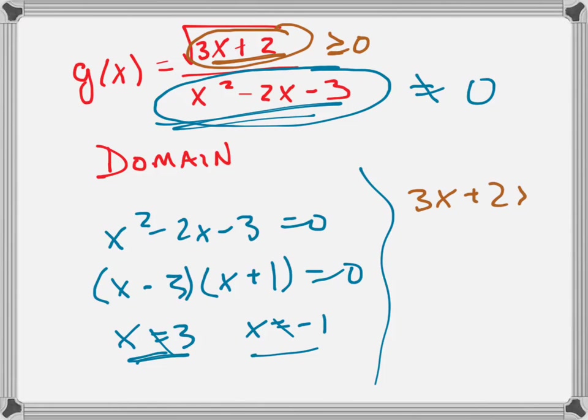So we write 3x plus 2 is greater than or equal to 0. We solve that. 3x is greater than or equal to negative 2. x is greater than or equal to negative 2 thirds.